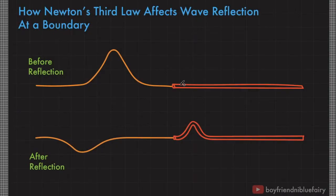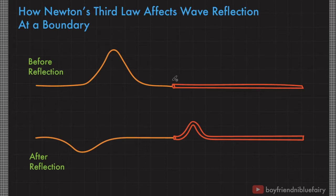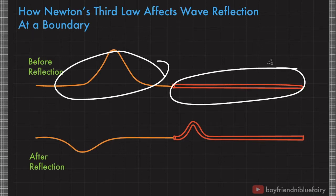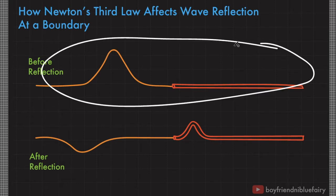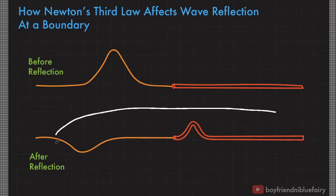Today, we will be exploring how Newton's third law affects wave reflection at a boundary. This portion shows a string with low linear mass density connected with another string that has a high linear mass density. This upper figure shows the behavior of the wave before reflection, and the lower portion of this figure shows the behavior of the wave after reflection.